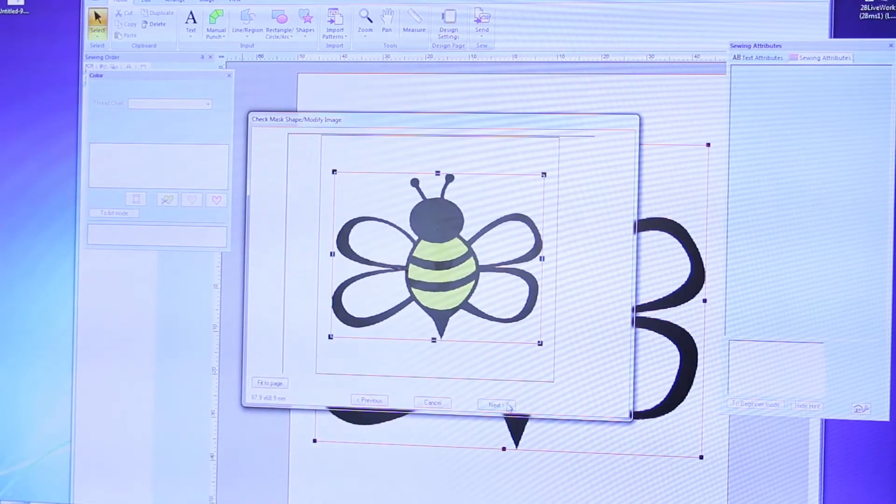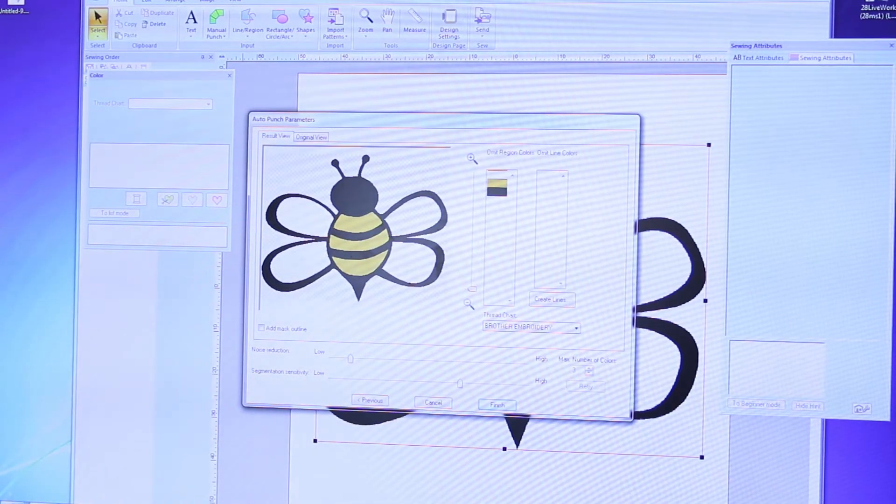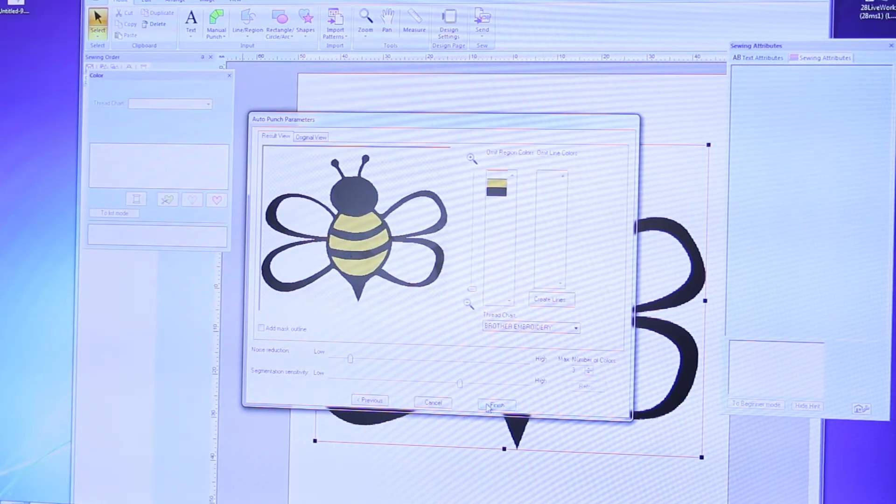Hit Next until the color selection window appears. Make sure all of your colors are picked up, as white may not be.